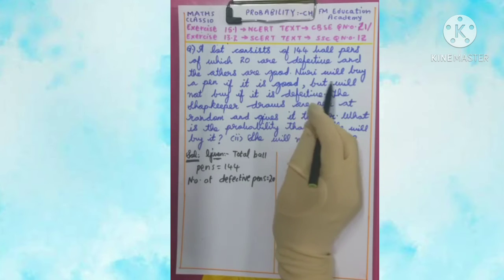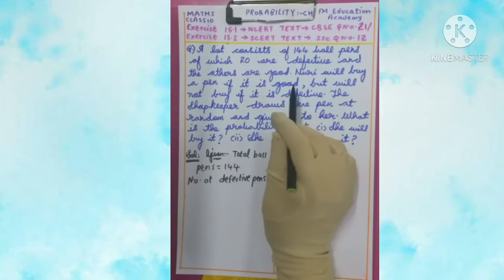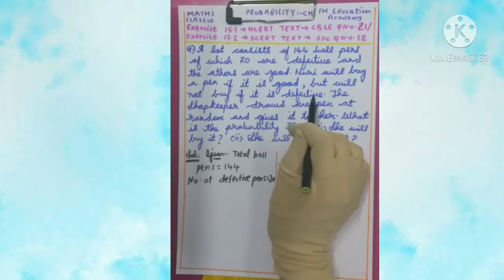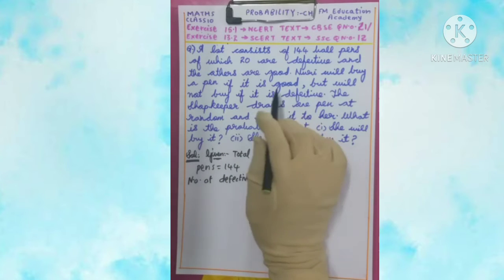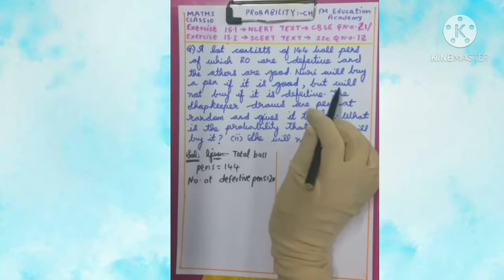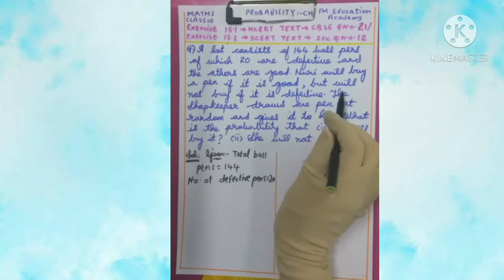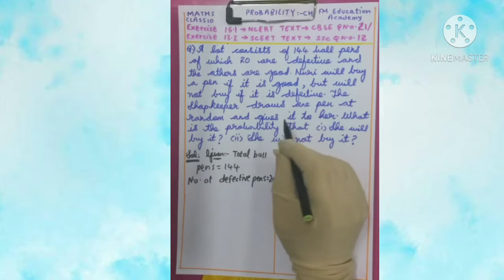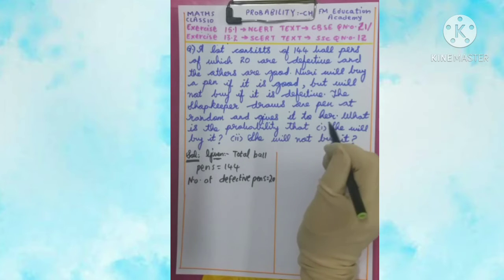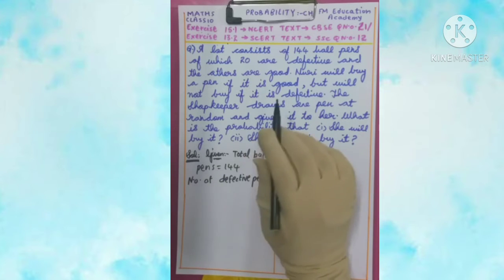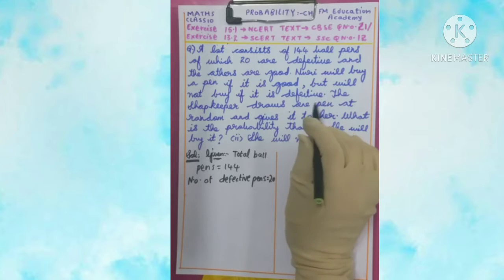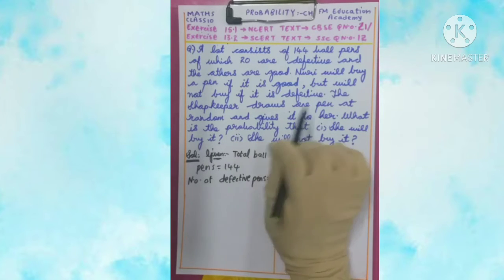Noori will buy a pen if it is good but will not buy if it is defective. That is, she will purchase a pen only if it is in working condition and will not purchase if it is not in working condition. The shopkeeper draws one pen at random and gives it to her — the shopkeeper does not know whether the pen is good or defective; he just takes it at random.